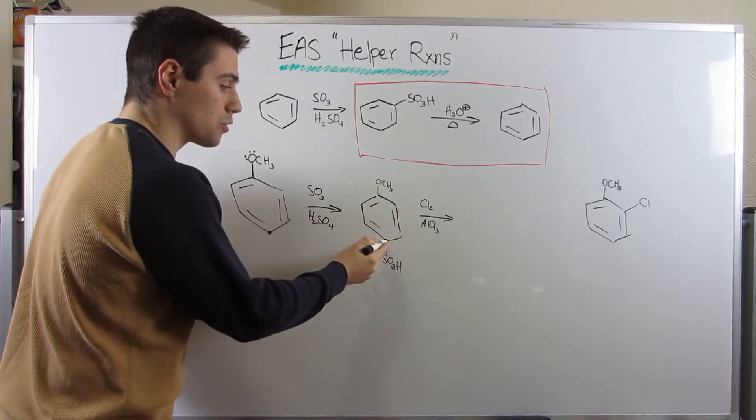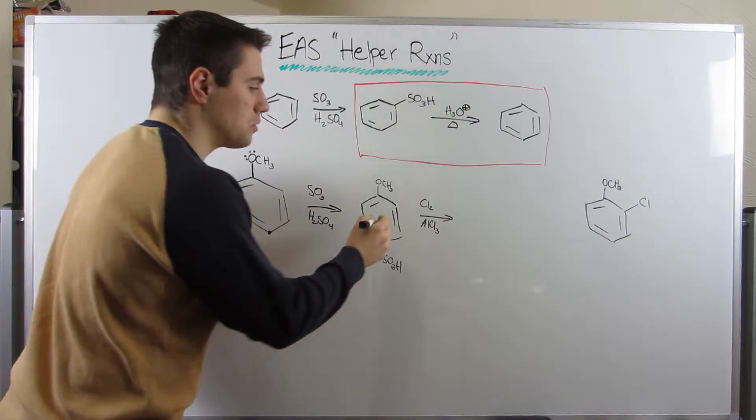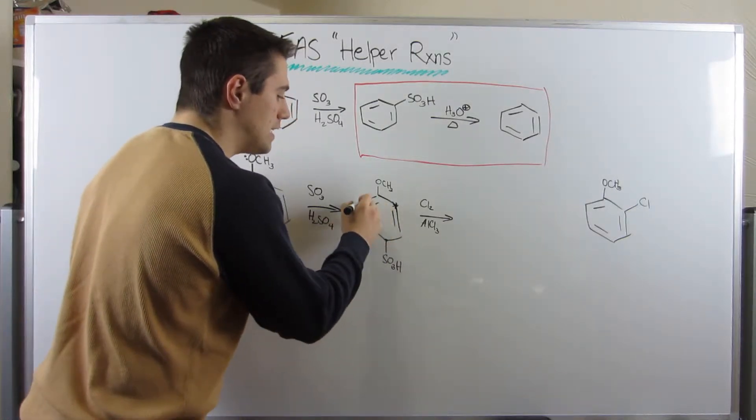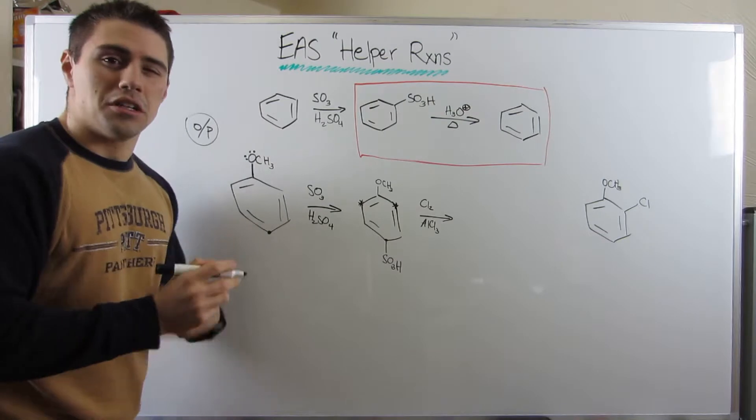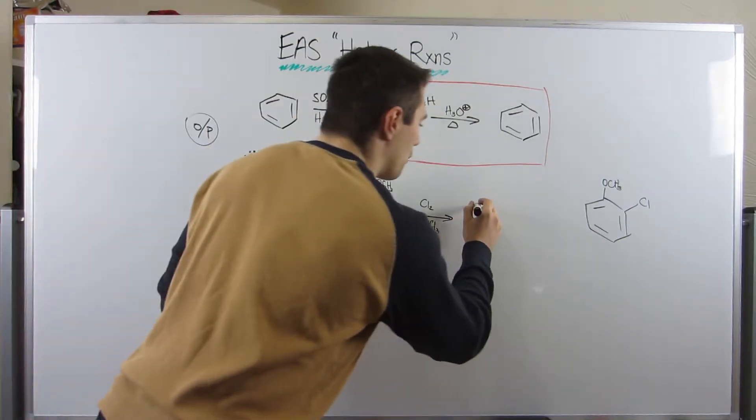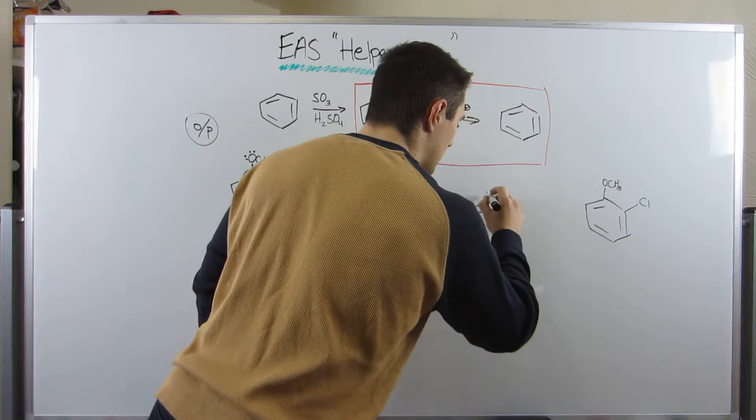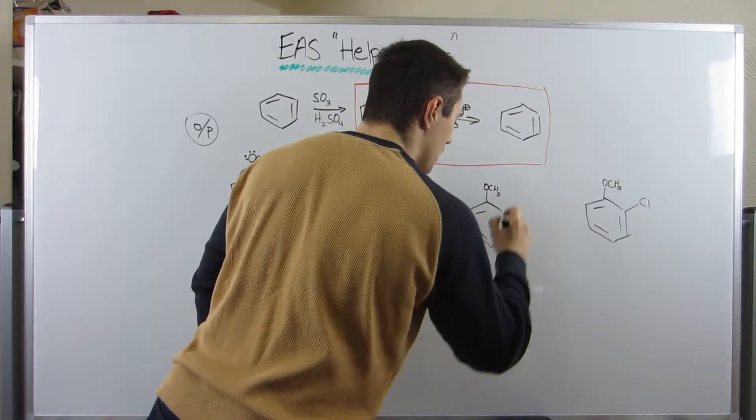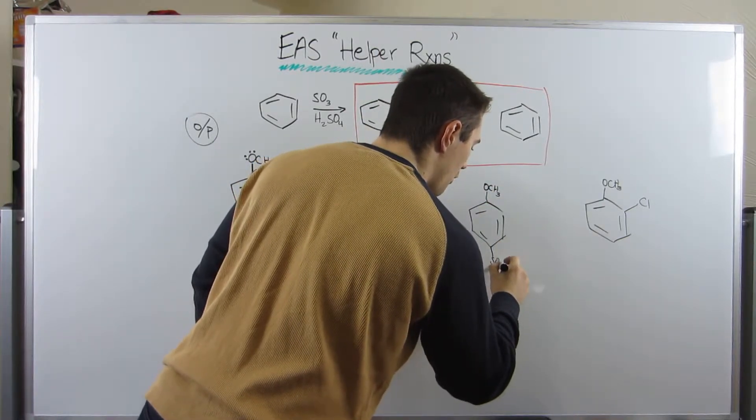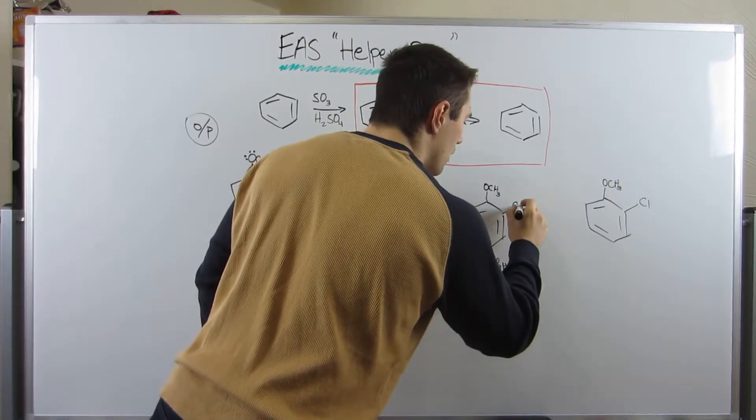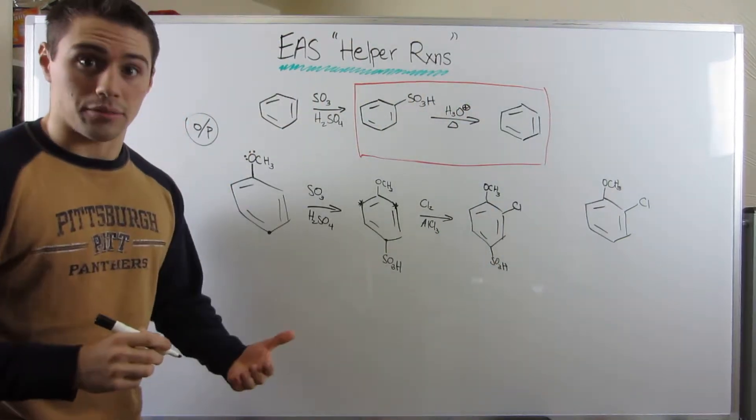So he has no choice. This group can't direct this chlorine para. The only place it can possibly go is in one of the ortho-positions. So you see how this works? Now, if I drew the result of this, I didn't touch my methoxy group. I didn't touch my sulfonyl group. And now, I just add on that chlorine.